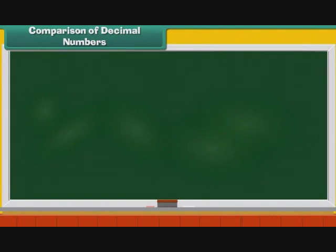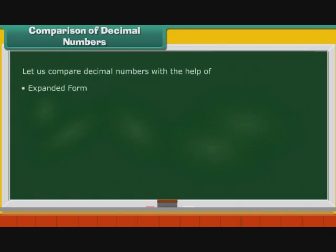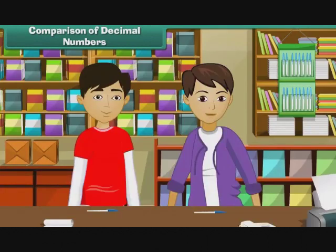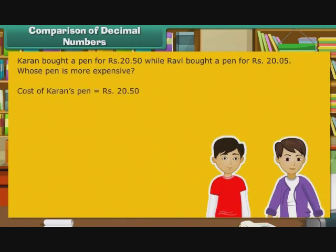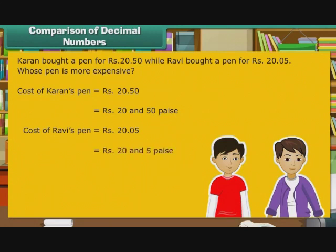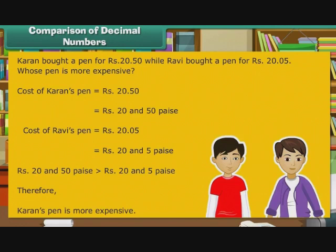Comparison of Decimal Numbers. To understand decimals better, we now compare decimal numbers with the help of expanded form, ascending and descending order. Karan bought a pen for Rs. 20.50, while Ravi bought a pen for Rs. 20.05. Whose pen is more expensive? The cost of Karan's pen is Rs. 20.50 and the cost of Ravi's pen is Rs. 20.05. Since Rs. 20.50 is greater than Rs. 20.05, therefore Karan's pen is more expensive.